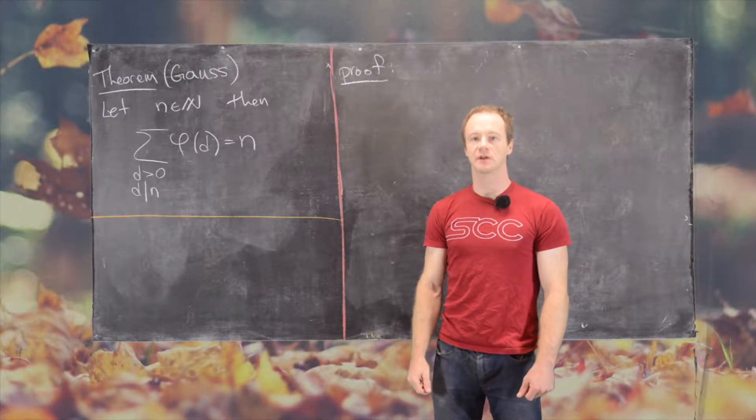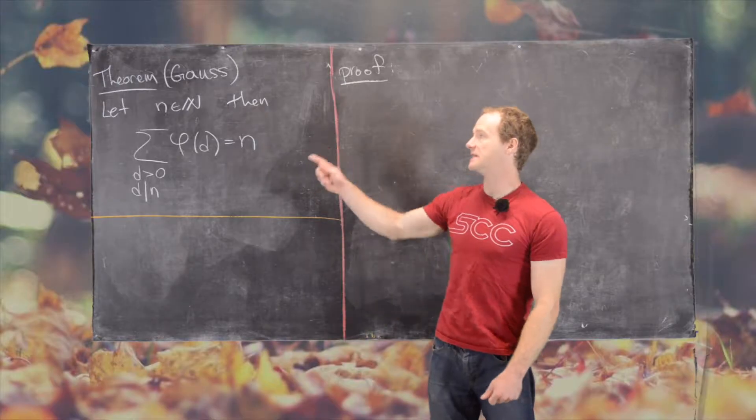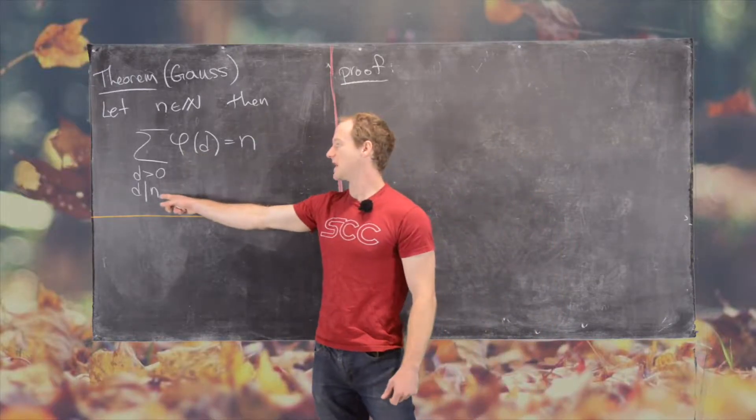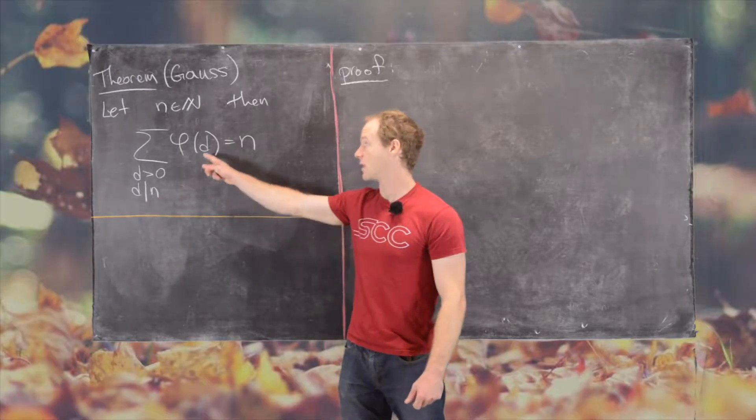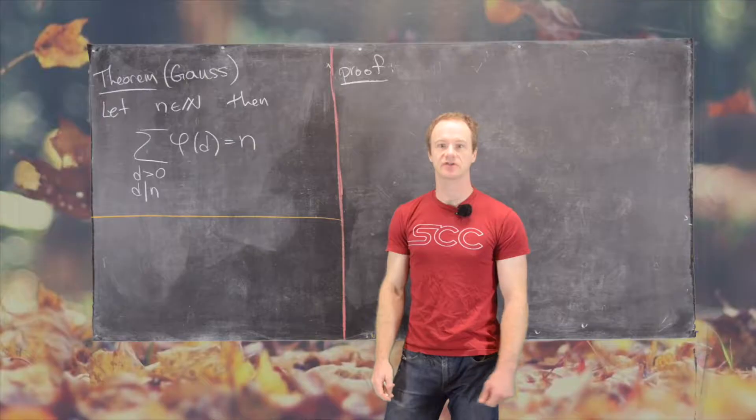In this video we're going to look at the following very classic theorem of Gauss. If we take a natural number n, then if we sum over the positive divisors of that natural number of the Euler-Phi function, we get n. So we get the natural number back again.